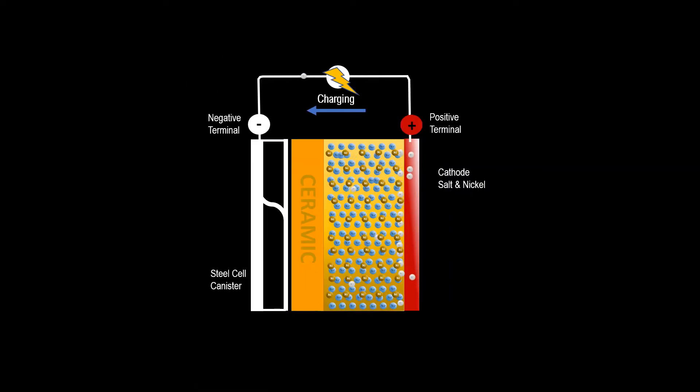As the battery charges, electrons flow from the positive to the negative terminals. Sodium ions from the salt flow through the ceramic tube to the negative terminal, leaving the chloride behind. Chloride ions attach to the nickel, making nickel chloride.